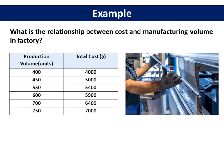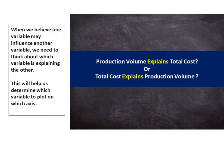Let's look at an example. What is the relationship between cost and manufacturing volume in a factory? When we believe one variable may influence another variable, we need to think about which variable is explaining the other.